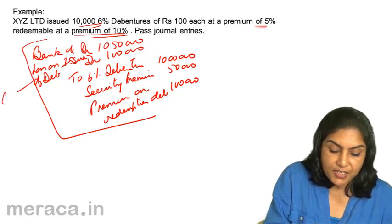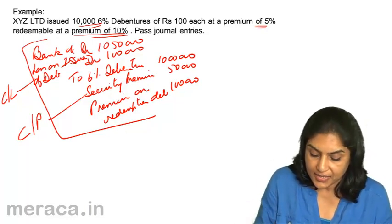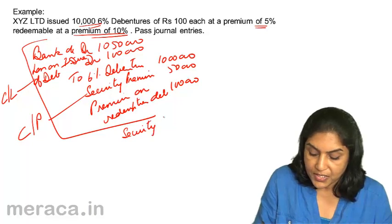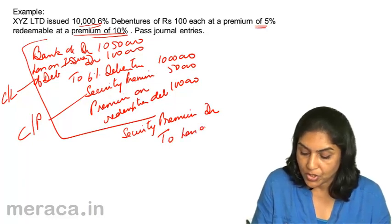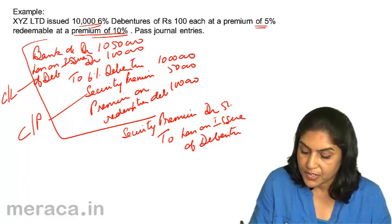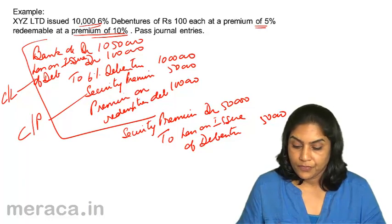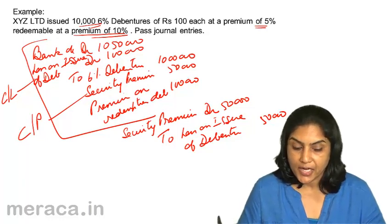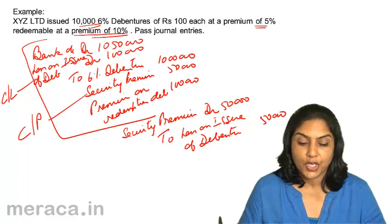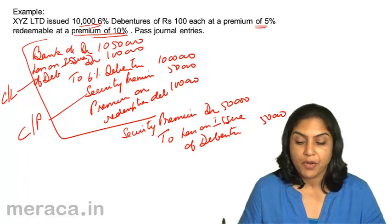However, since the loss on issue of debentures is an item of capital loss and securities premium is an item of capital profit, one may be set off against the other. The entry in that case would be security premium account debit to loss on issue of debentures, with the lower amount of Rs.50,000. We've thus covered accounting entries in case debentures were issued at par, premium, or discount, and whether they are redeemable at par, premium, or discount.